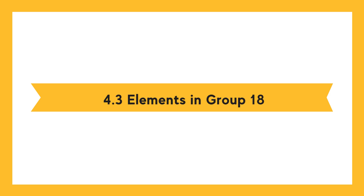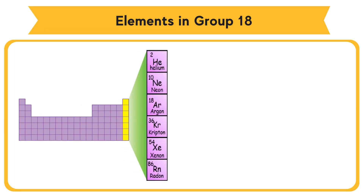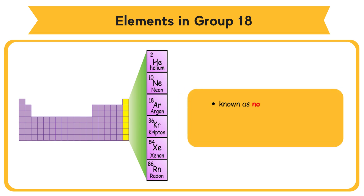4.3 Elements in Group 18. Group 18 is located in the far right of the periodic table of elements. Group 18 elements are also known as noble gases. All elements in Group 18 are found as monoatomic gases in room condition.